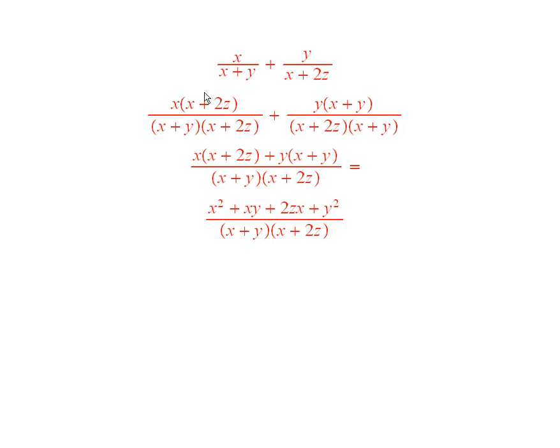So now you can add them. It's this thing plus this thing over this common denominator. And if you like, and sometimes you want to do this, you can multiply this out. So you have x squared plus 2xz plus yx plus y squared. And then if you combine all that, this is what you get.